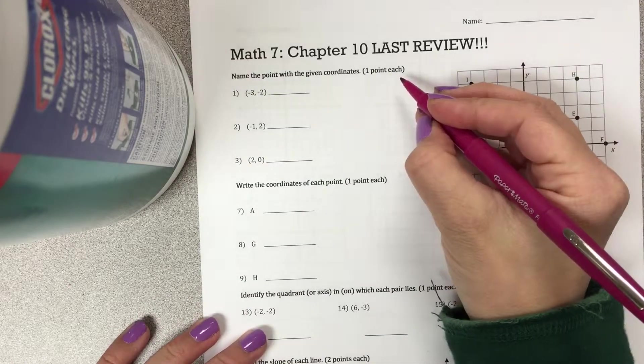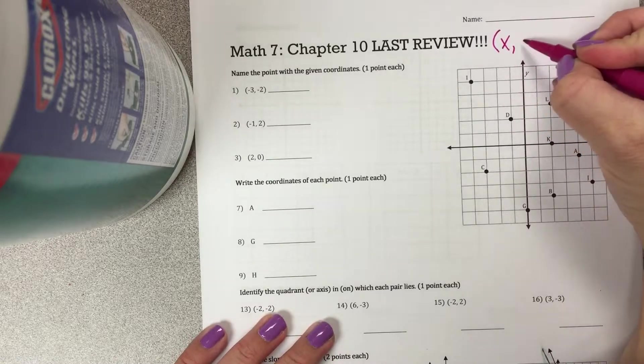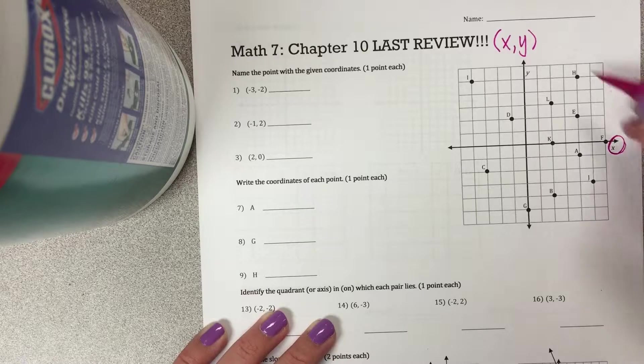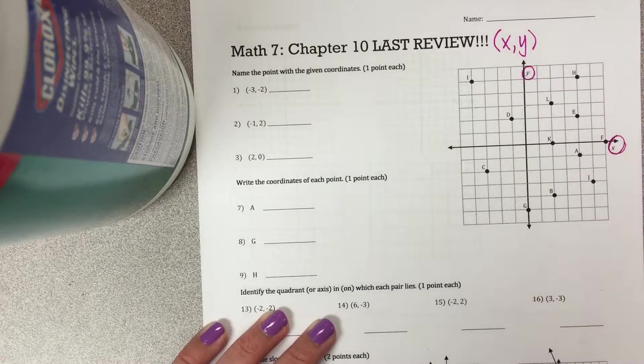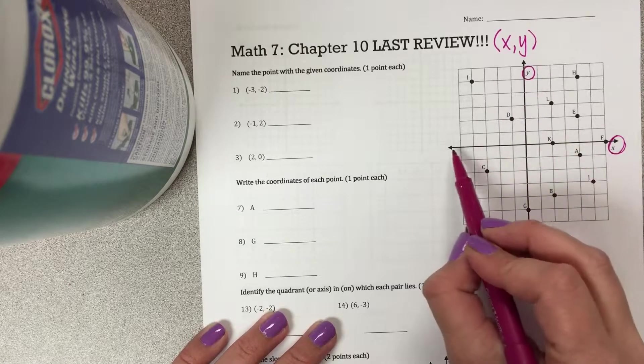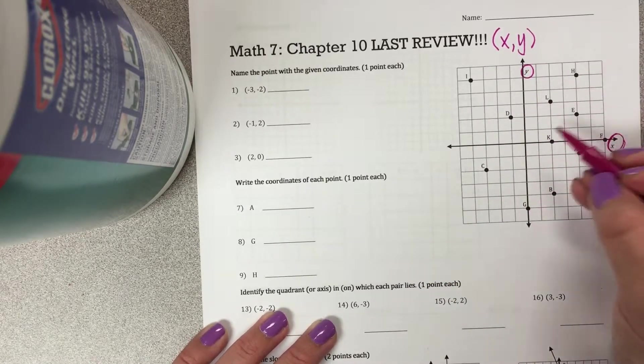First thing, when you are naming coordinates, you have to remember that it's always X and then Y. This is your X-axis, it's even labeled for you, and this one is Y. So just like Battleship, when it's giving you the X coordinate and then the Y, you figure out where you are on the X and then where you are on the Y.